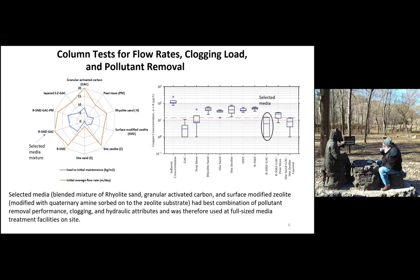On the left side, we have the 10 major components and mixtures examined during the long-term tests. The orange line on the outside is the average initial flow rate obtained at these sites during these tests. The internal blue circle-ish shape is the load produced onto these columns before initial maintenance was required, in kilograms per square meter. Our selected media — based upon performance, hydraulic characteristics, and clogging — was a mixture of rhyolite sand, a surface-modified zeolite, and granular activated carbon, mixed in equal volumes.